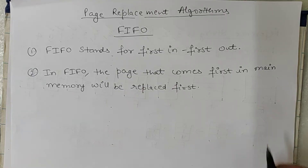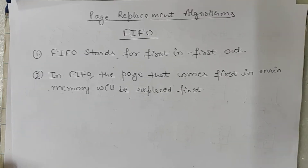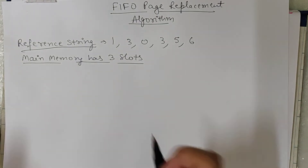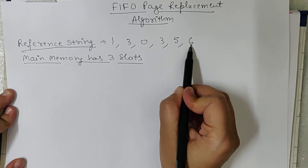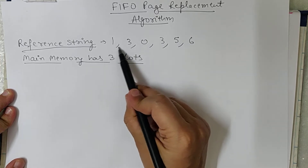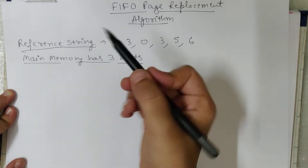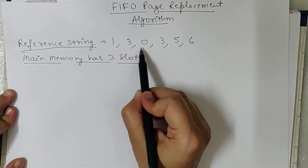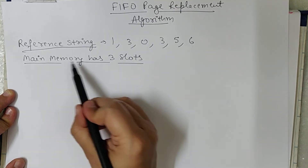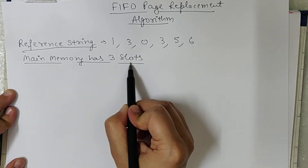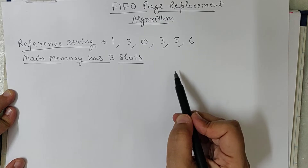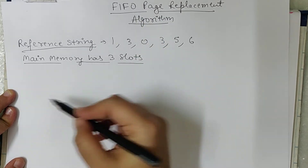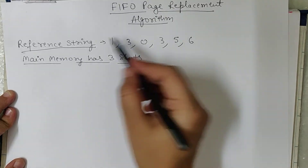Let's explain this FIFO replacement algorithm with the help of a question. The reference string is given — reference string means the CPU wants to execute pages in this order. For example, CPU wants to execute page 1, then page 3, then page 0, and so on. Main memory has three slots, and we have to calculate the number of page faults using FIFO.